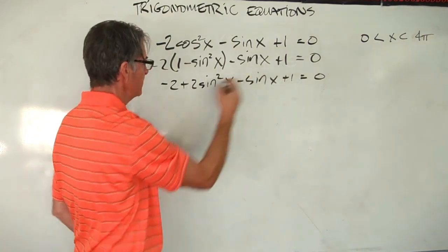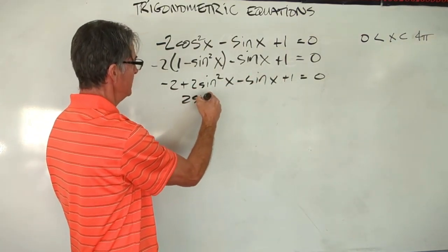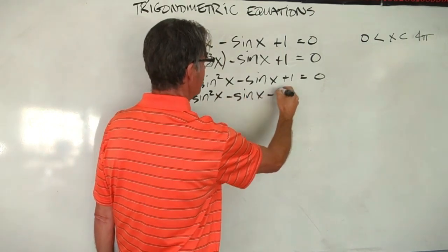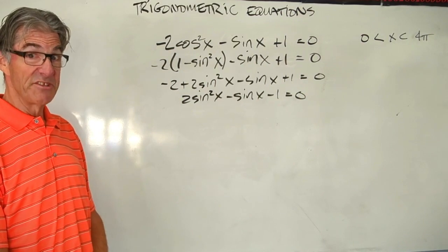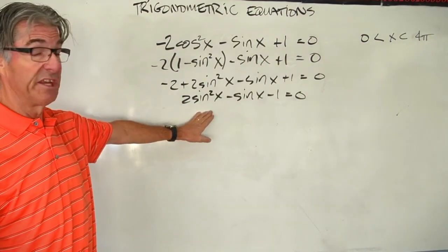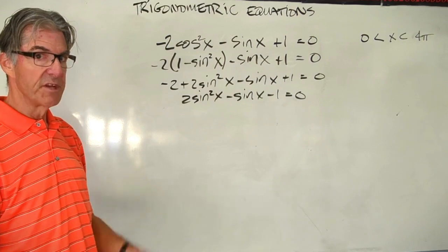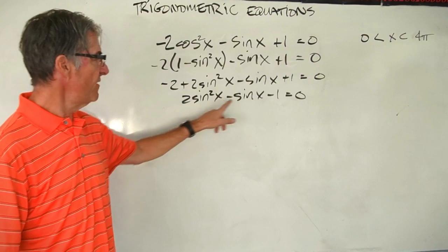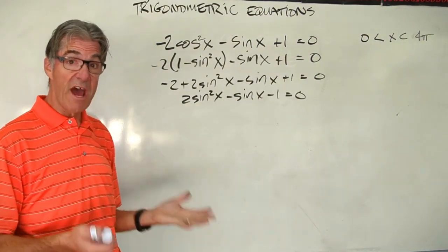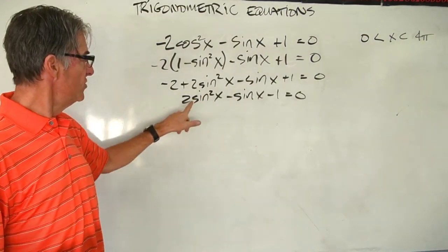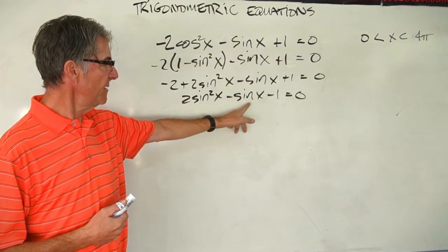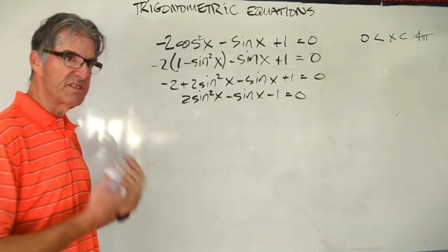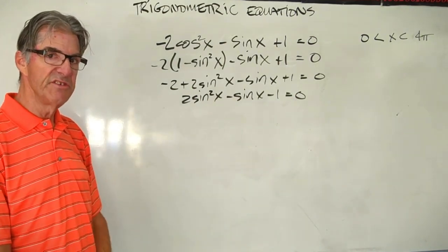Distributing the minus 2: minus 2 plus 2 sine squared x minus sine x plus 1 equals 0. Combining constants (negative 2 and plus 1) and moving them over: 2 sine squared x minus sine x minus 1 equals 0. Now your next step is a little tricky — we need to factor this. This is a quadratic: twice something squared minus the something minus 1 equals 0.